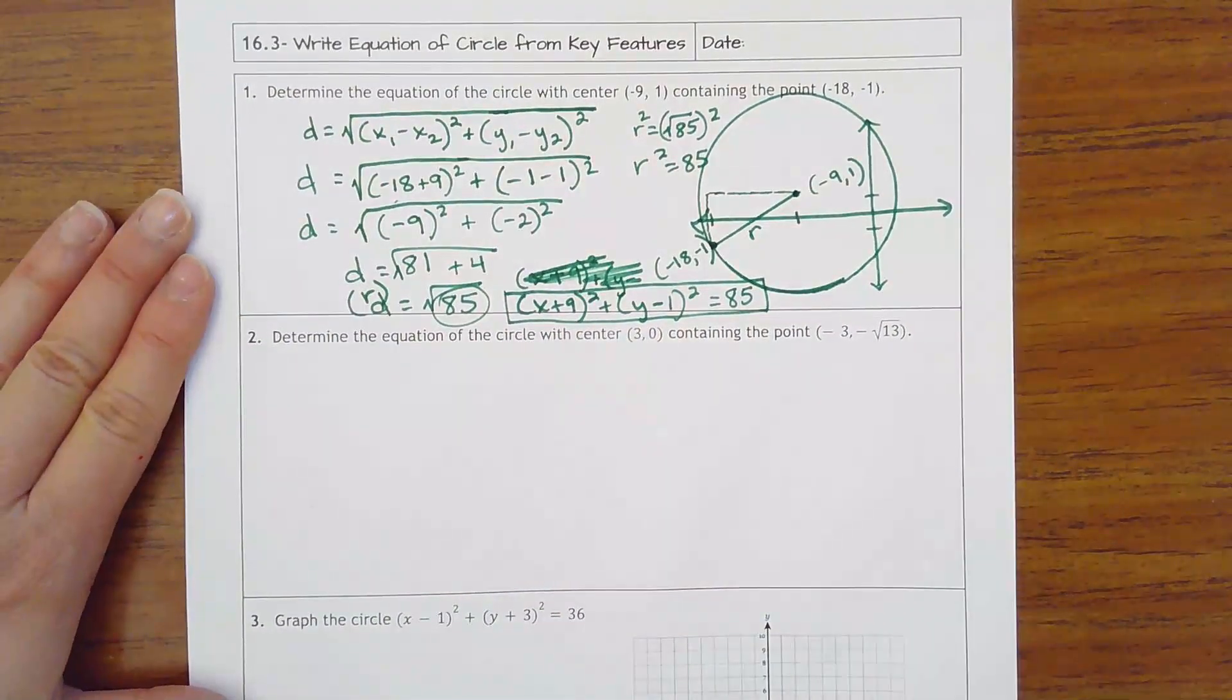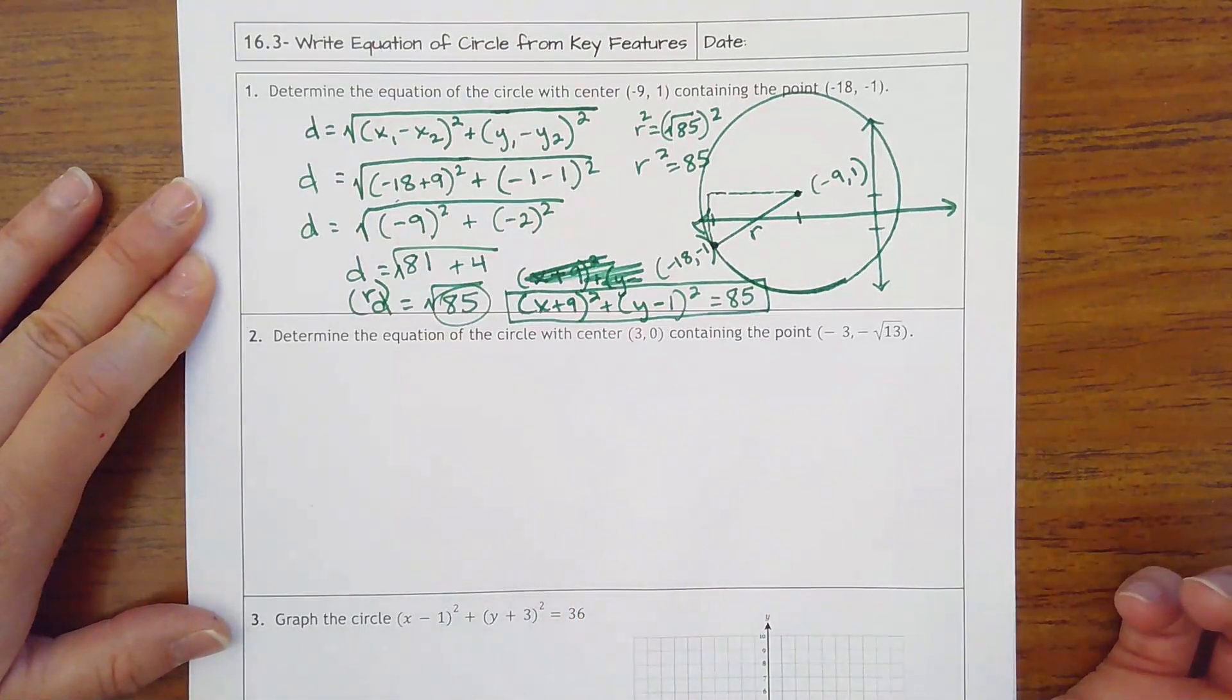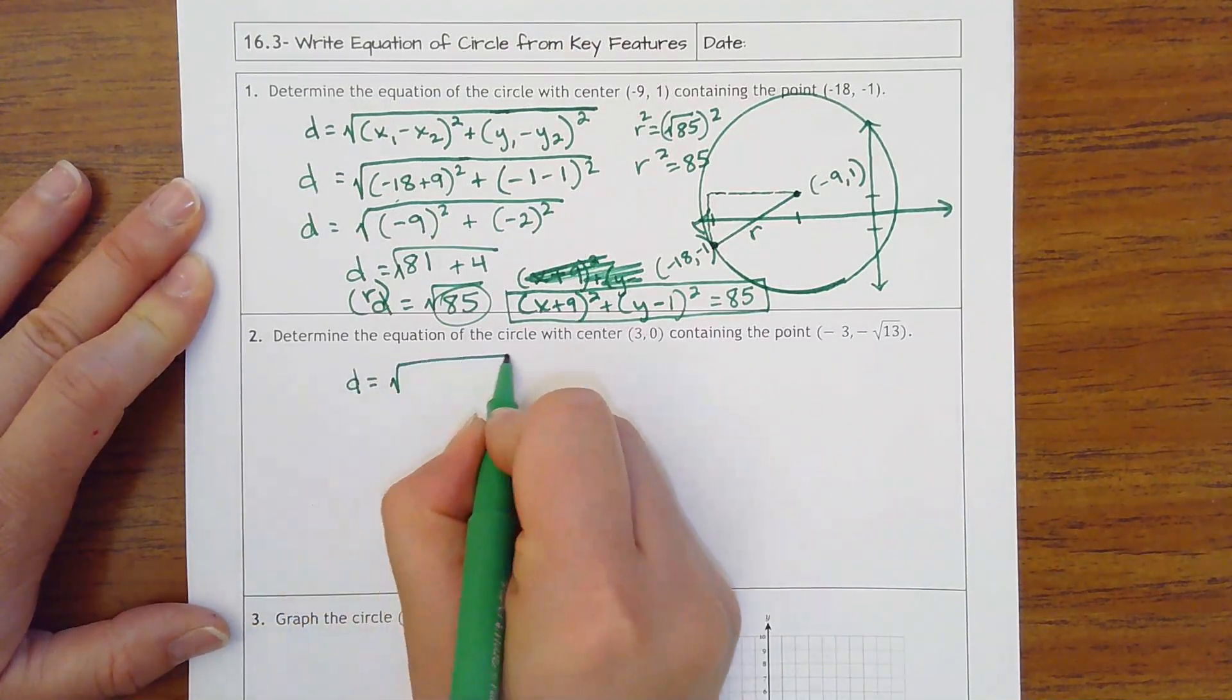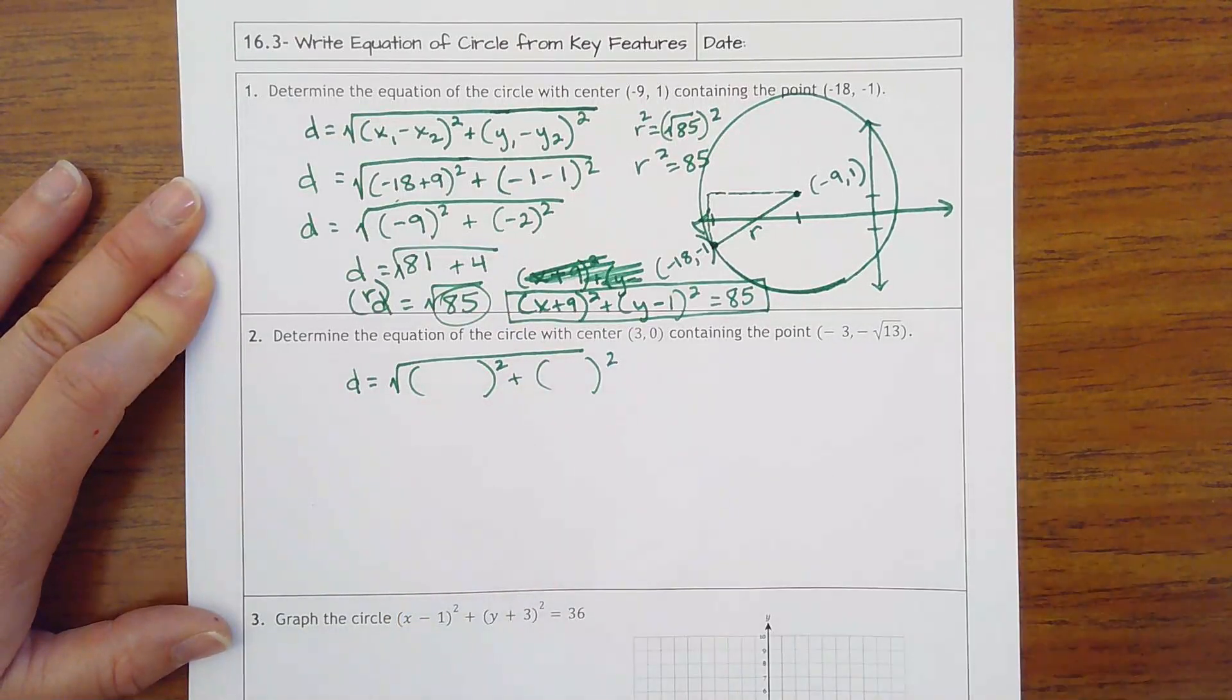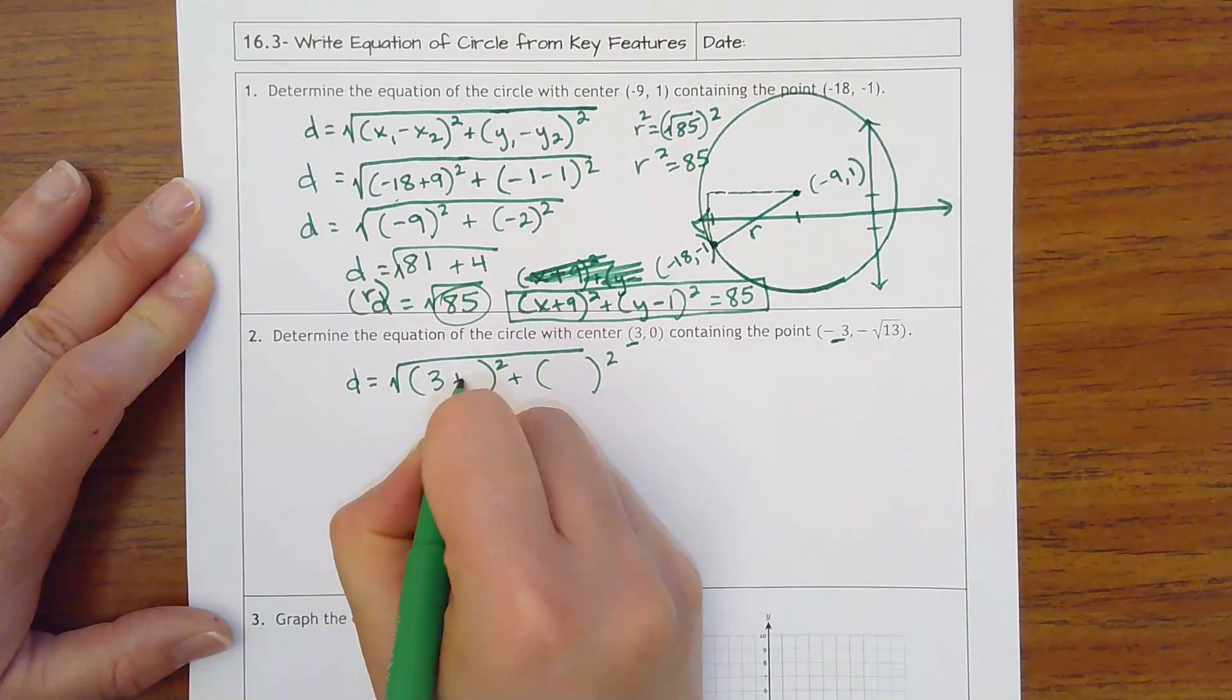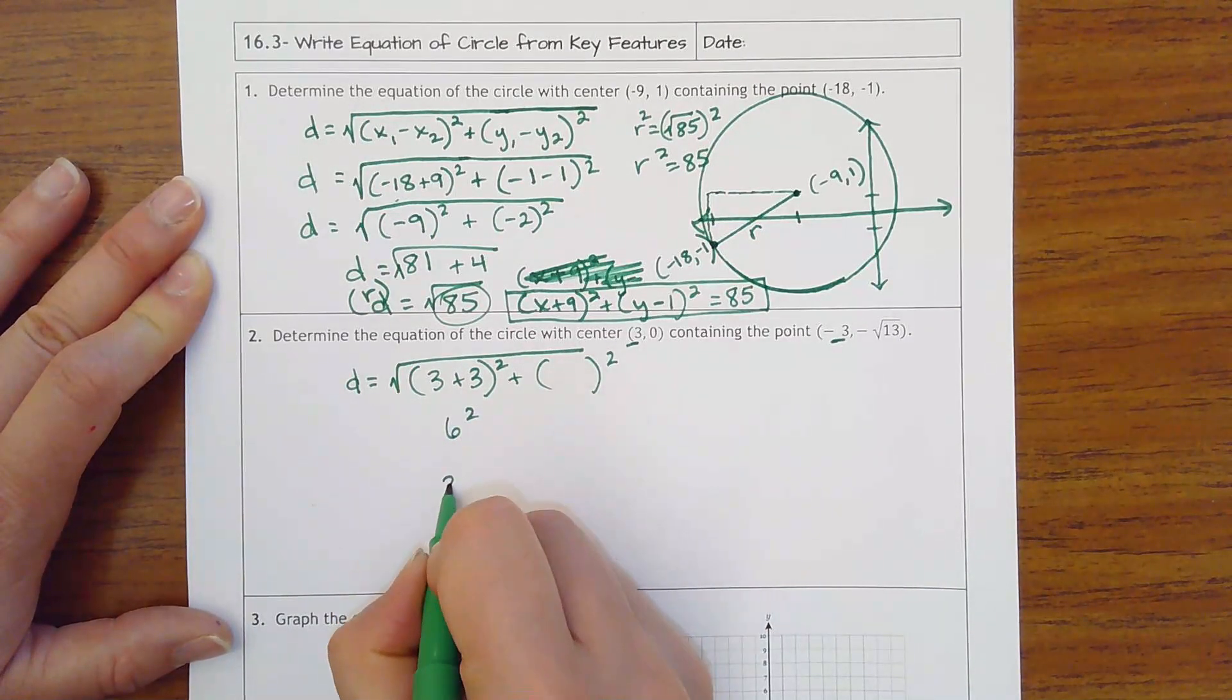All right, number two, let's try another one without a picture. Determine the equation of the circle with the center at (3, 0) containing the point (-3, -√13). So let's find the distance. You almost can't mess it up because you're just trying to find the distance between x's and y's and then you're doing like a Pythagorean theorem. So I'm going to do 3 minus negative 3, or 3 plus 3. 3 plus 3 is 6. 6 squared is 36.